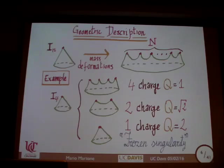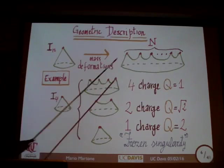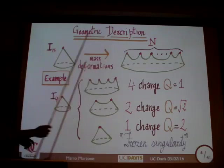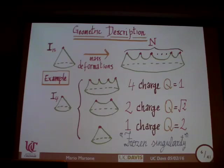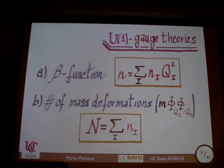If you turn on mass terms, that singularity splits up into a bunch of other singularities, so the moduli space becomes more complicated. The number of singularities you get is exactly equal to the number of mass terms you can write. So if I tell you there is an I_4 singularity as a cone and ask what theory I'm talking about — you can't tell me, because what you know is the beta function is 4, but there are different assignments of charges and numbers of fields that can fulfill that.